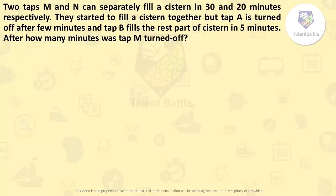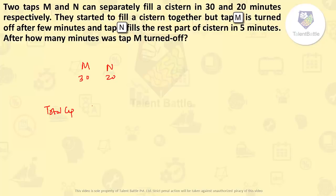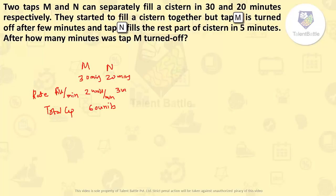2 taps M and N can separately fill the tank in 30 and 20 minutes respectively. They started to fill together but tap M is turned off after a few minutes, and tap N fills the rest in 5 minutes. After how many minutes was tap M turned off? Total capacity is LCM of 30 and 20 = 60 units. M fills 60/30 = 2 units per minute. N fills 60/20 = 3 units per minute.